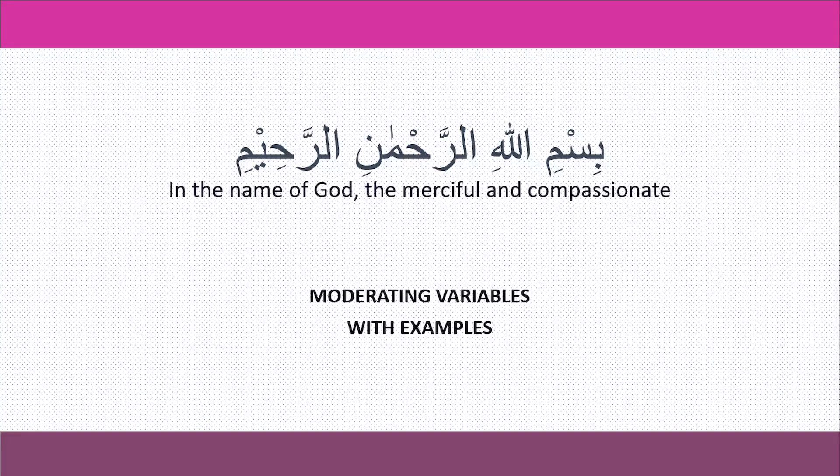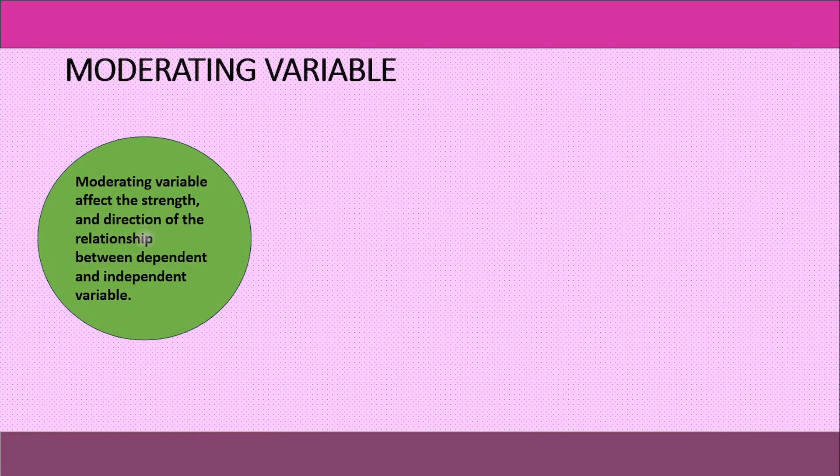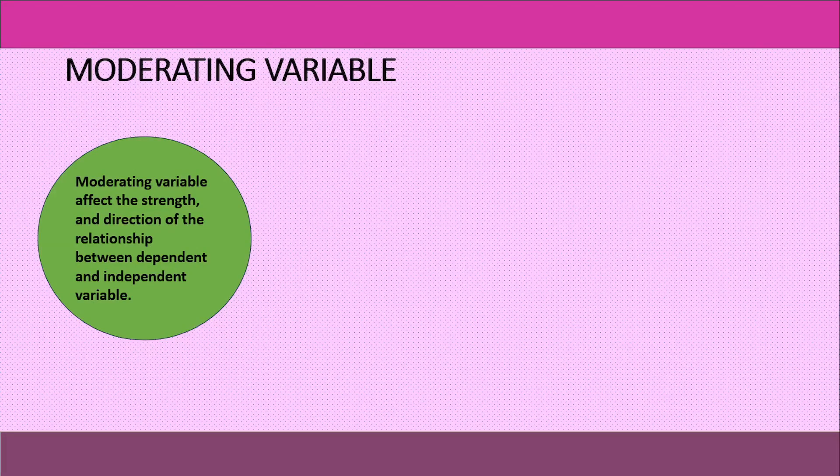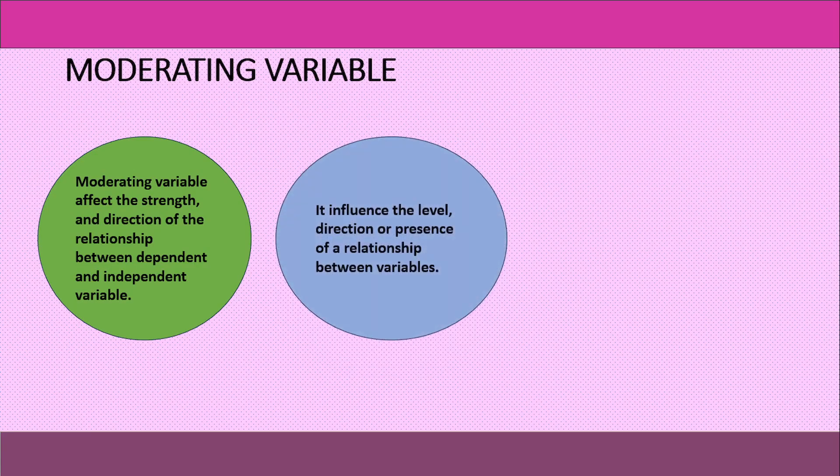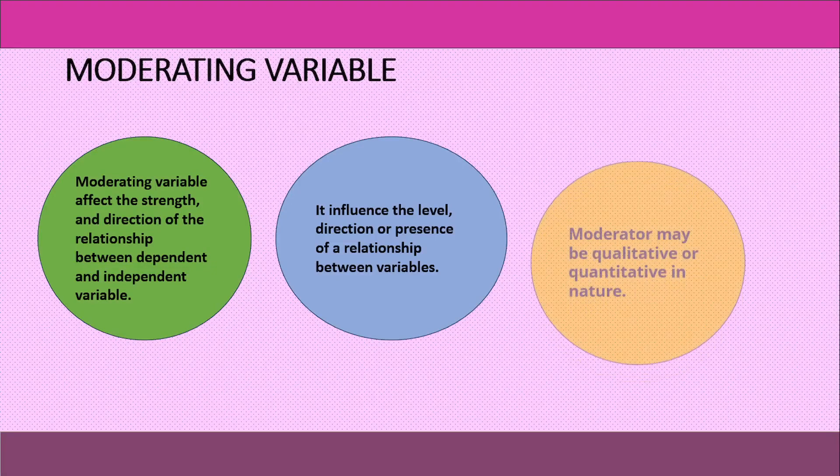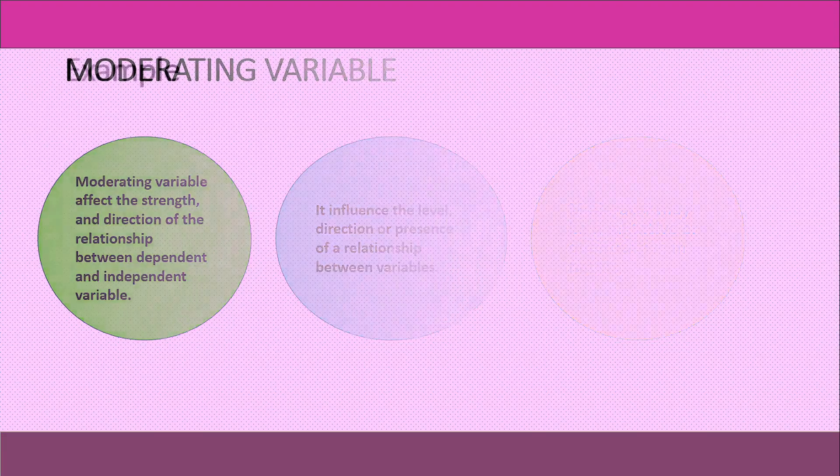Today we will discuss about moderating variable in research. Moderating variables affect the strength or direction of the relationship between independent and dependent variables. They influence the level, direction, or presence of a relationship between dependent and independent variables. They may be qualitative or quantitative in nature.